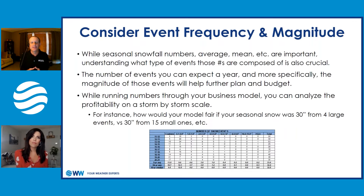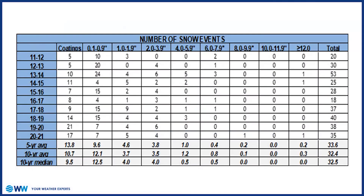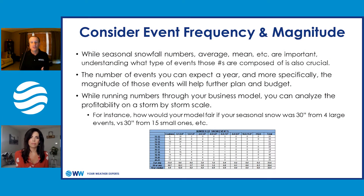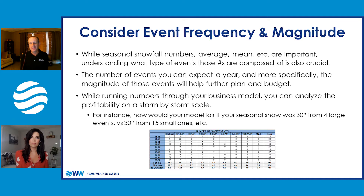These are averages and trends we find. The number of events you can expect in a year — more specifically the magnitude of those events — is really important. Do you get like twenty 1-to-3-inch snowfalls, or do you get like two big 2-foot snowfalls? There's a huge difference between what's going to happen and what you have to do as a business for snow removal — staffing and all that kind of stuff. How would your model fare if the seasonal snow was 30 inches from 40 large events versus 30 inches from 15 small ones? You get a half inch of snow at 4 in the morning along a major thoroughfare versus a snow shower on a countryside road at midnight — it's a big difference.